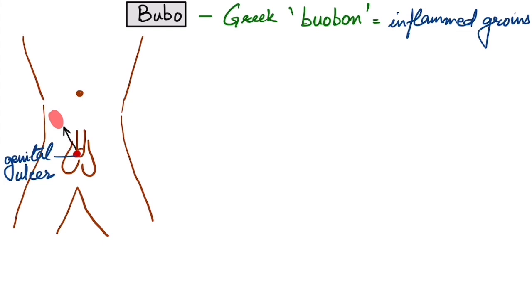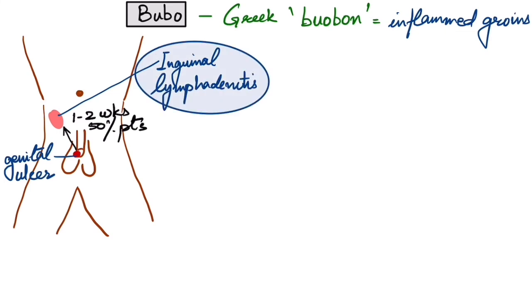There will be inguinal lymphadenitis and it takes around one to two weeks after ulcer to develop inguinal lymphadenitis. This is usually unilateral.